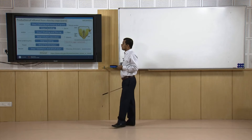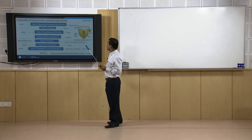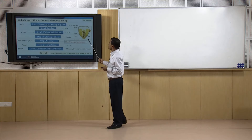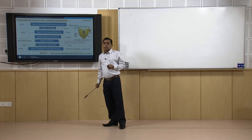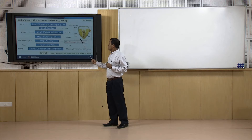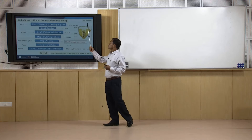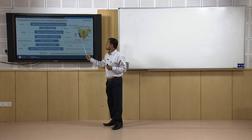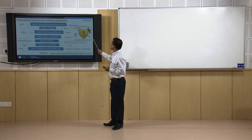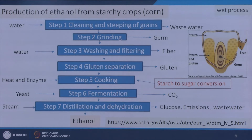Now we will concentrate on the production of ethanol from starchy crops. One example is corn. Corn contains germ, gluten, starch, and bran — these are the compositions of corn. If we want to use this feedstock for ethanol production, there are basically two routes: one is the wet process and another is the dry process. In the wet process, the different parts are separated from the corn kernel before fermentation. In the dry process, separation does not take place at the initial stage; product recovery takes place later.